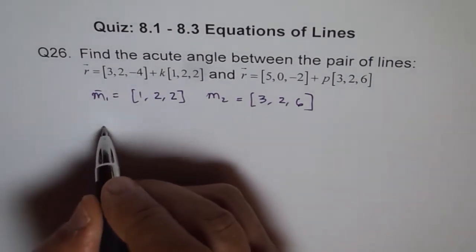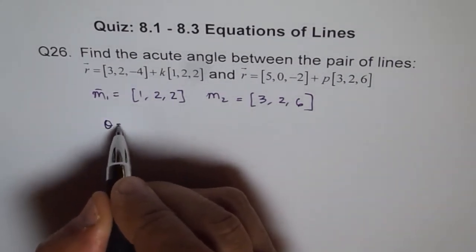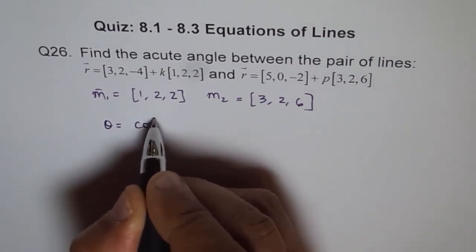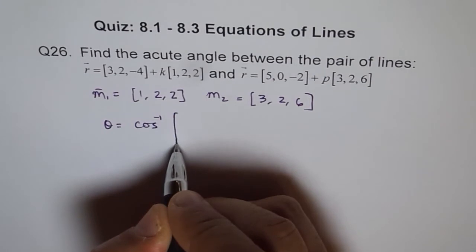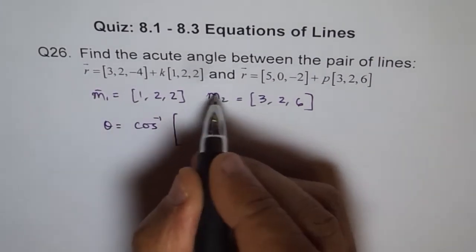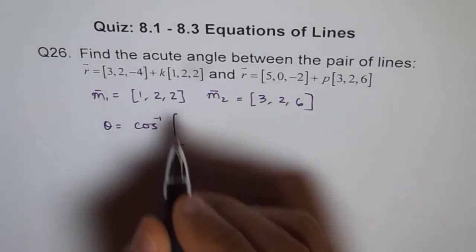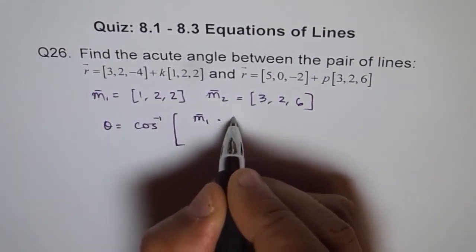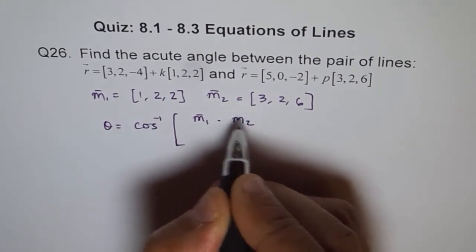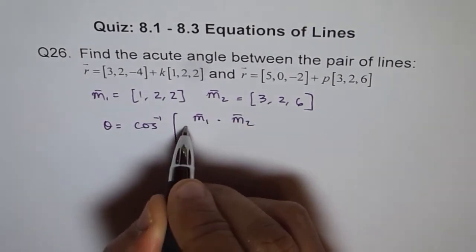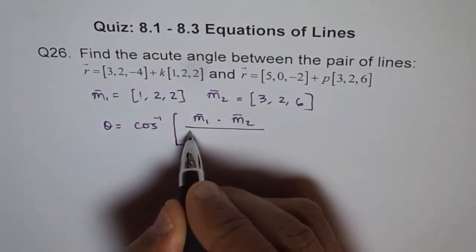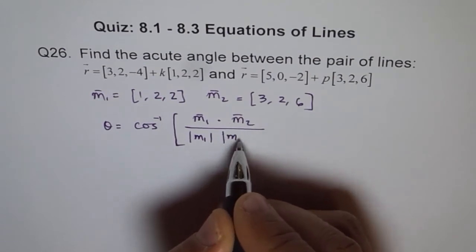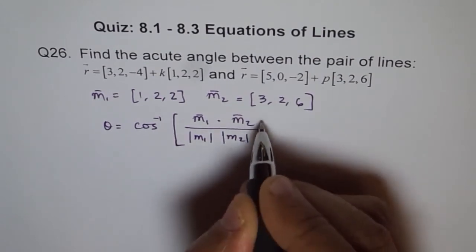So the angle theta equals cos inverse. The formula, as we did last time, is the dot product of these two — which is M1 dot M2 — over the magnitude of M1 times the magnitude of M2.